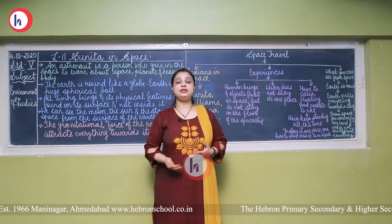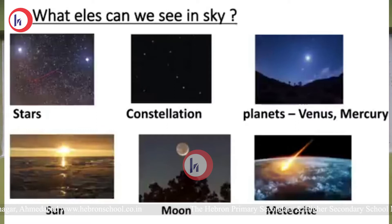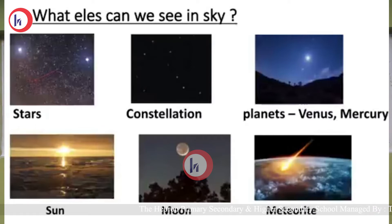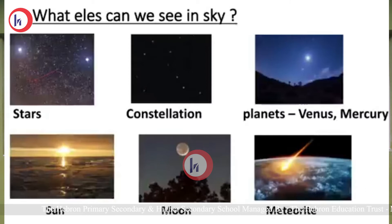What other things can you see in the sky? You can see the sun, stars, planets, moon, constellations, and meteorites. Constellation means when stars join with each other and make a shape — that is called a constellation. Planets like Venus and Mercury can be seen properly in the evening. Meteorites are objects which catch fire when they come in contact with the earth's atmosphere, and they come very fast toward the earth.